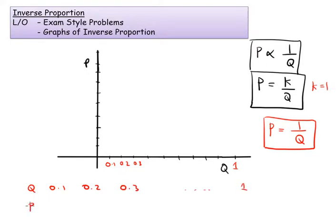So going up by 0.1, let's work out what P is. So P would be 1 divided by all of these. So 1 divided by 0.1 is 10, and then 1 divided by 0.2 is 5, and then 1 divided by 0.3 is going to be 3.3 recurring, and so on. And then 0.4, which is 2.5, and so on. And then 1 divided by 1 would be 1.